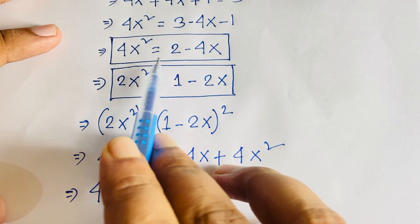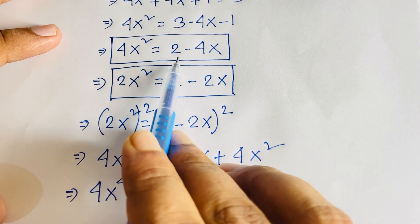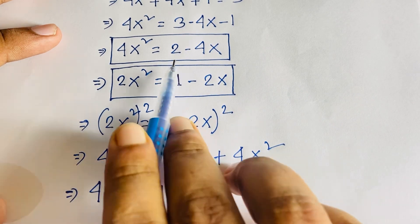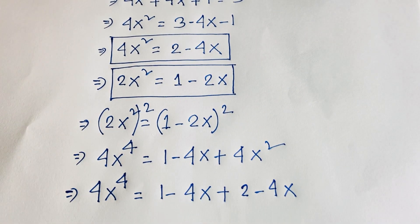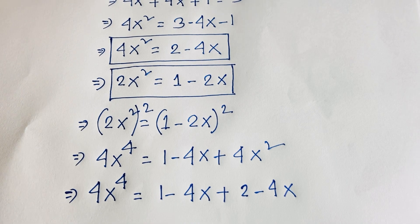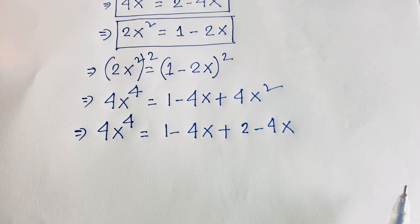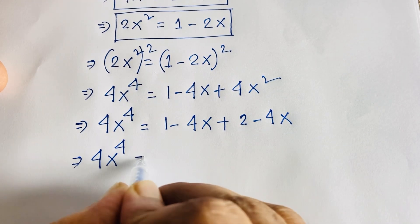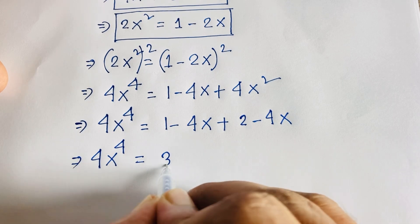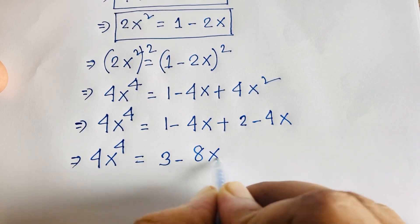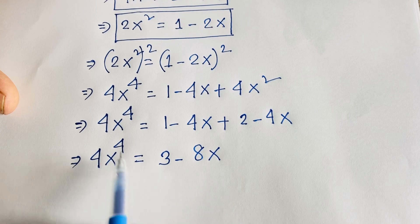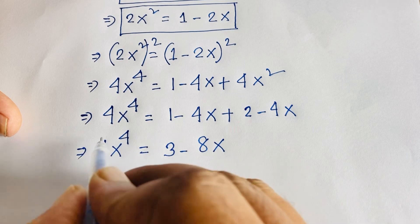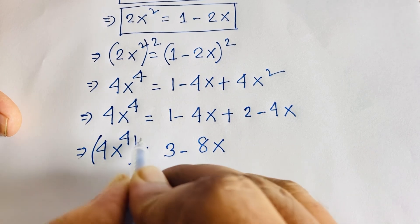Recall that 4x² = 2 minus 4x. Substituting this into the equation, 4x⁴ = 1 minus 4x plus (2 minus 4x), which gives 4x⁴ = 3 minus 8x. Now I square both sides again.